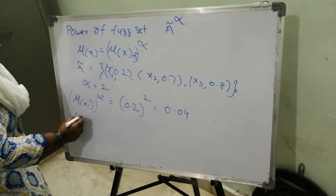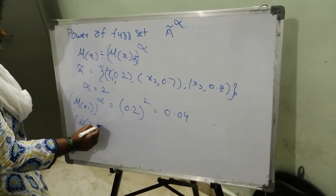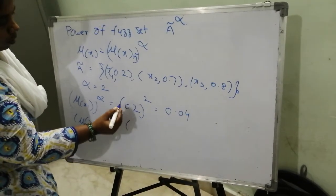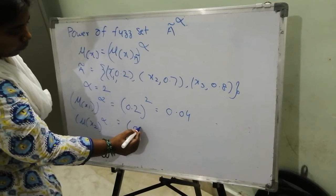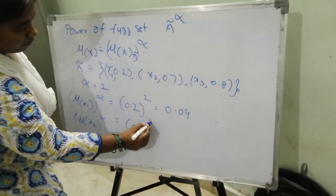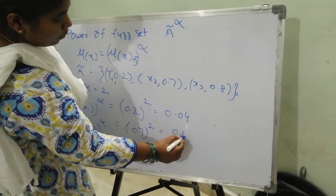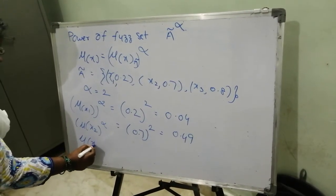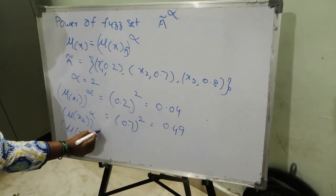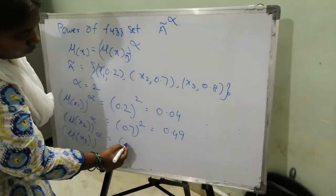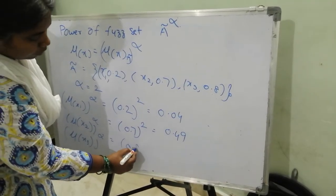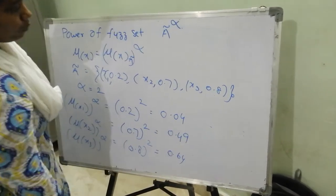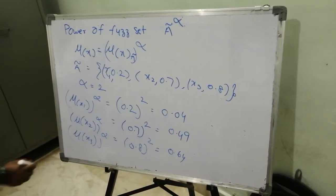Next, membership value of x2 raised to alpha. So second membership value 0.7 to the power of 2 equals 0.49. So membership value of x3 raised to alpha equals 0.8 to the power of 2 is 0.64. So power of fuzzy set